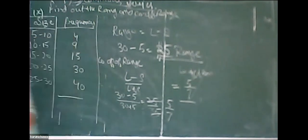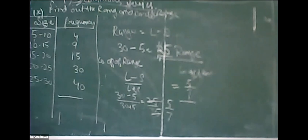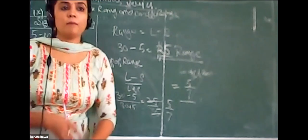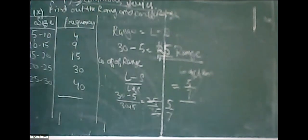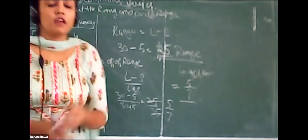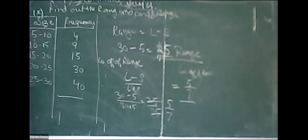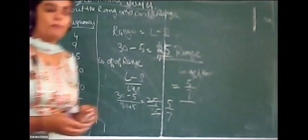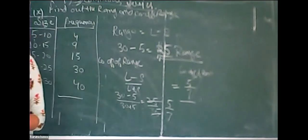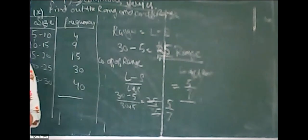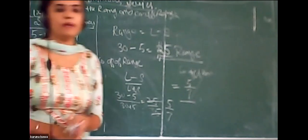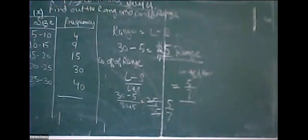Now some merits and demerits of range. Merits: it is simple to understand, simple to calculate, and widely used in statistical quality control. Demerits: it is based only on extreme values, it cannot be calculated in the case of open-end series, it is not based on all observations of the series, and it is affected by extreme values and sampling fluctuation.